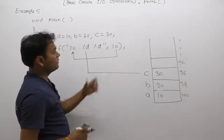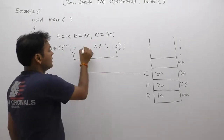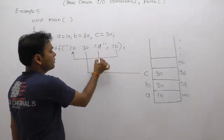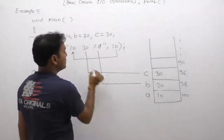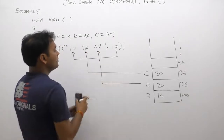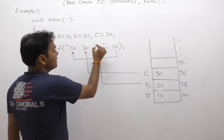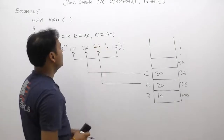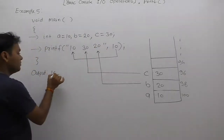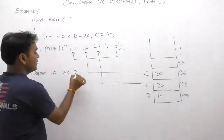The first top element is 30, therefore we are replacing the second format specifier with 30. The value of the next top element is 20, therefore we are replacing the third format specifier with the value 20. This is the final result: 10, 30, and 20. So the output of this printf statement is 10, 30, and 20.